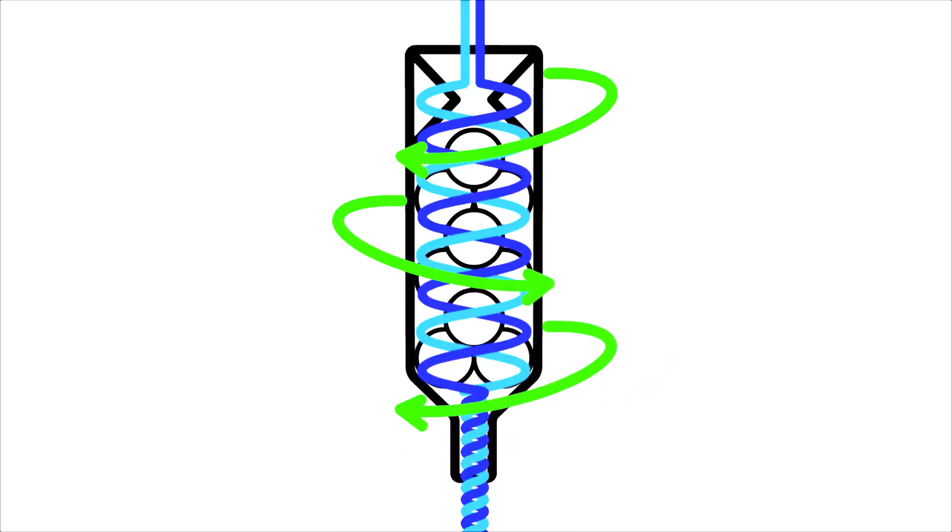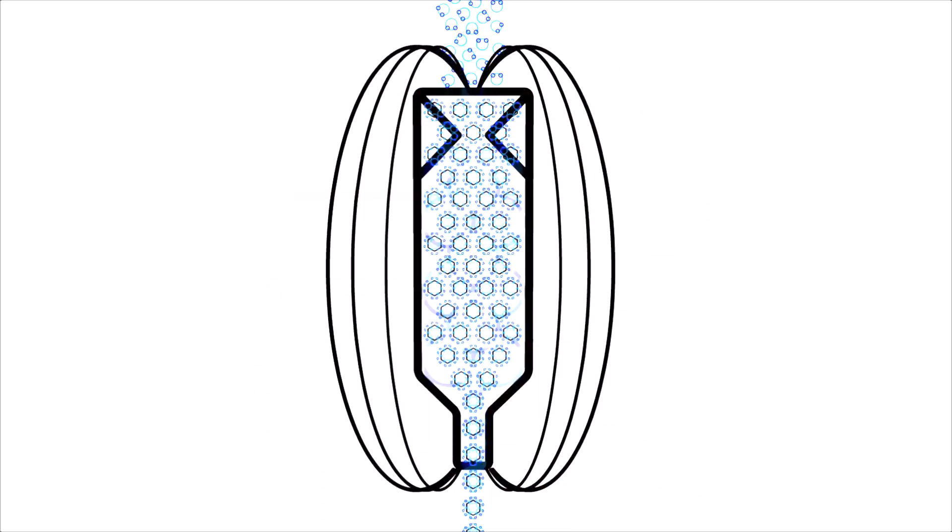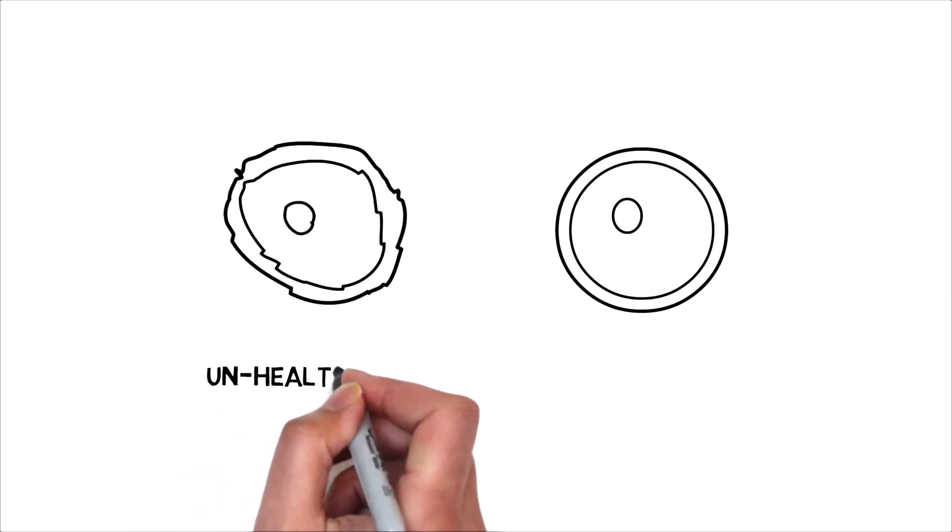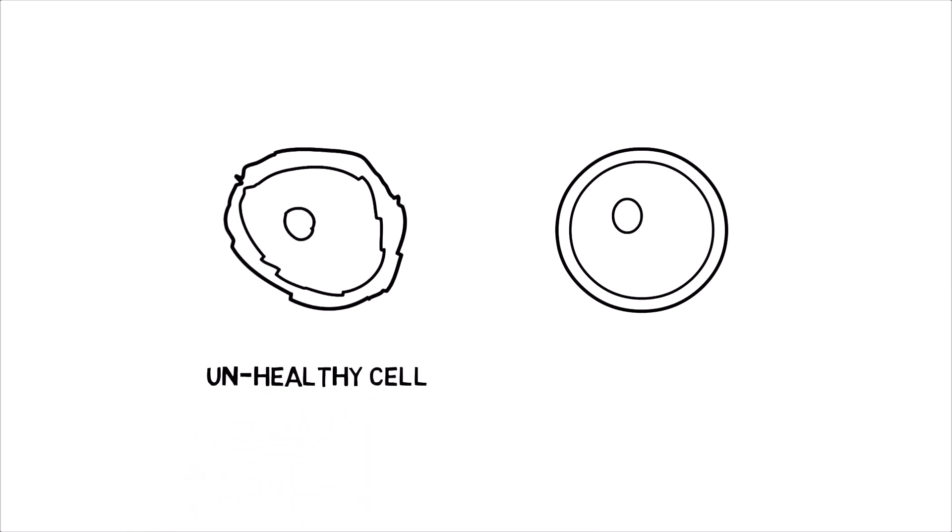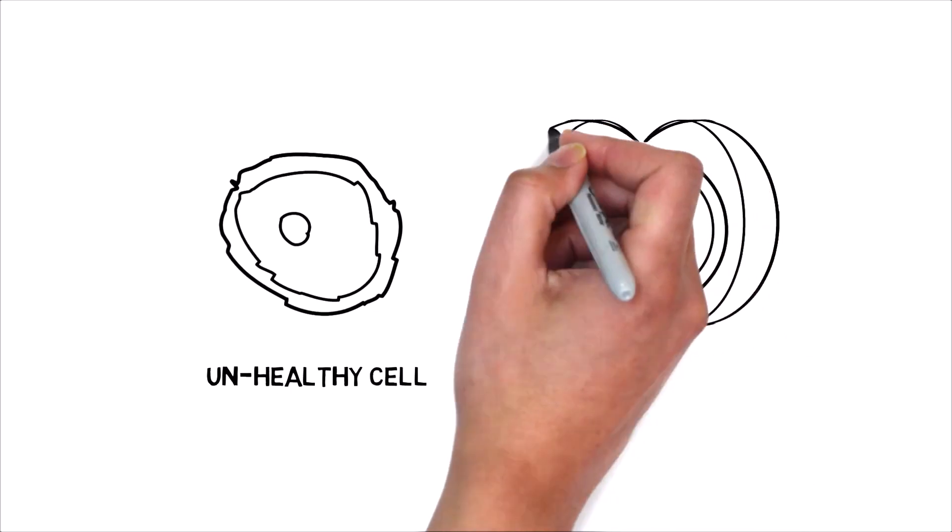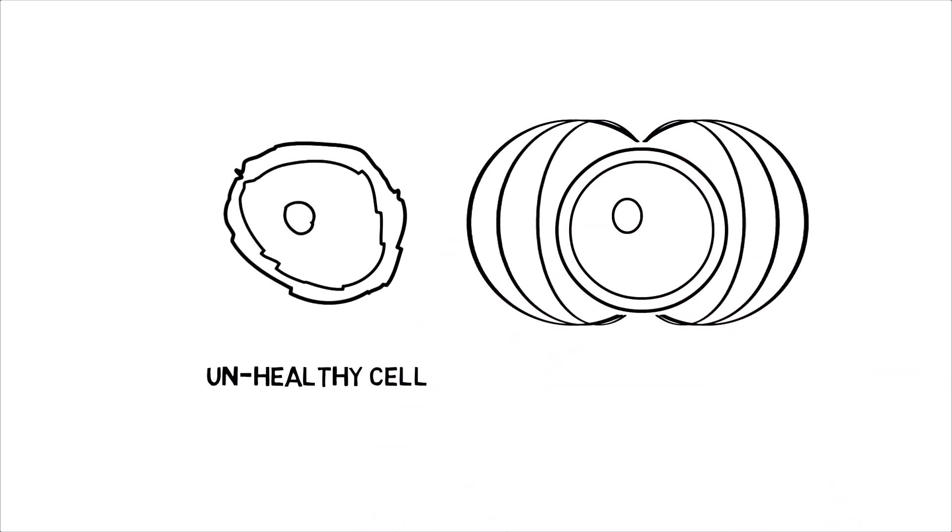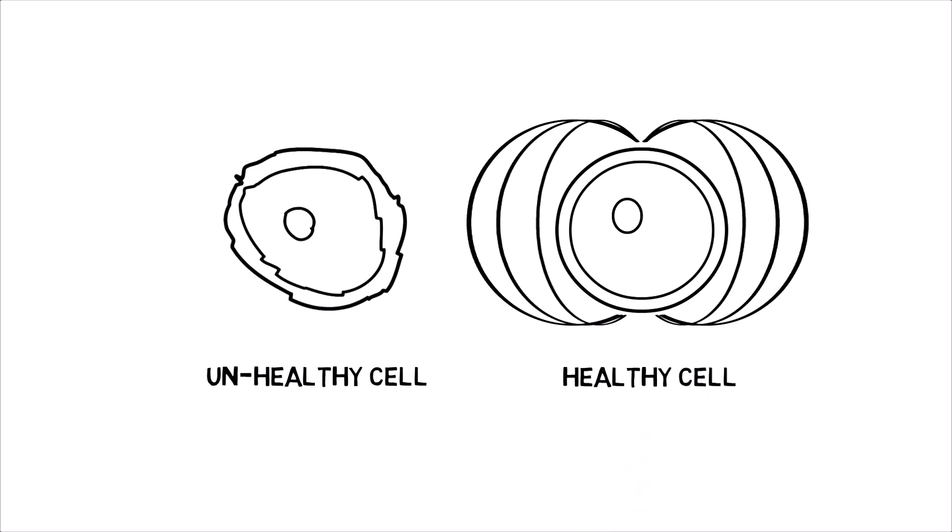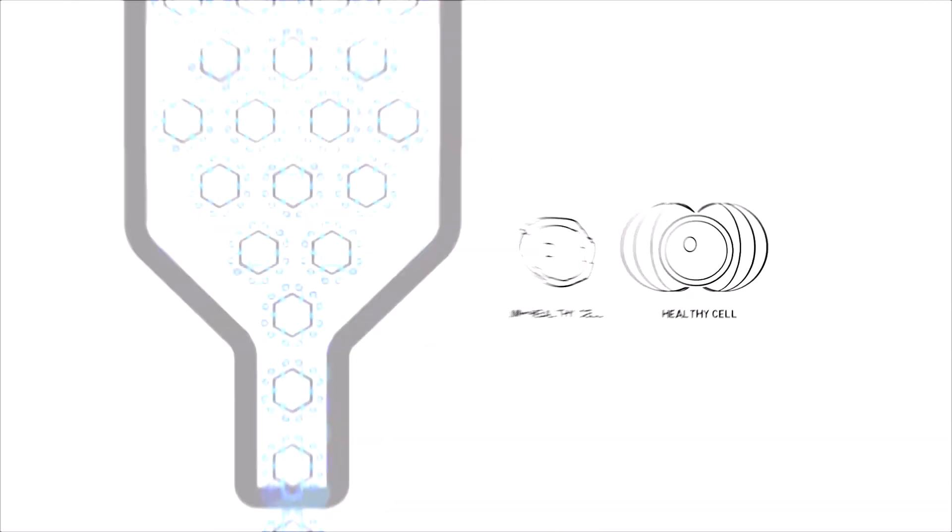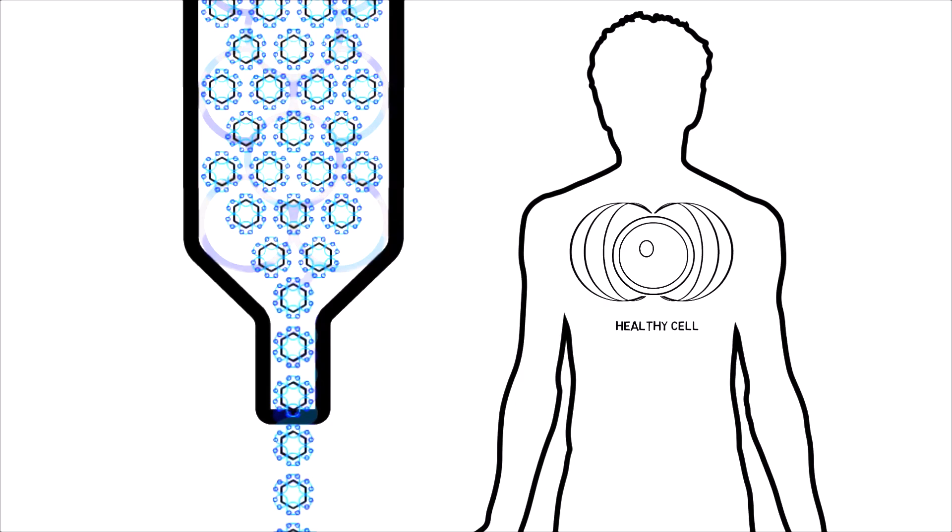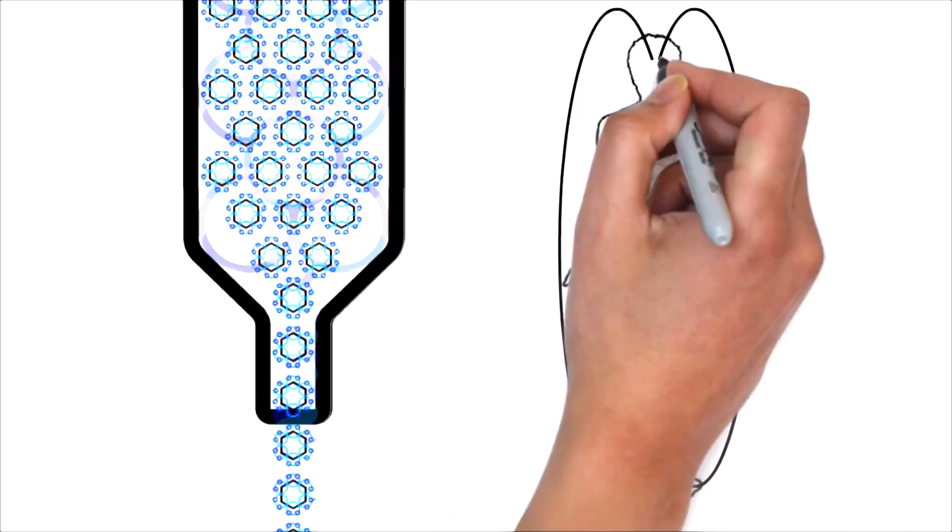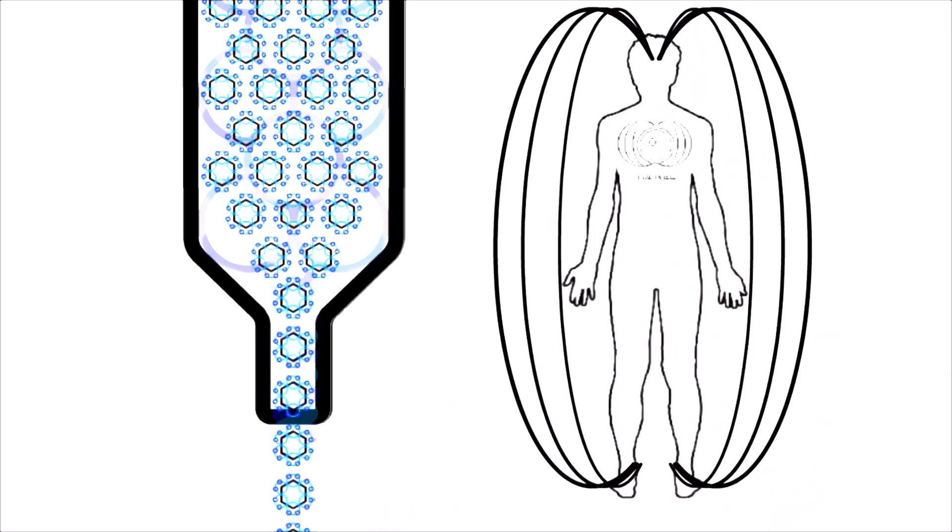The health of a biological cell is largely related to the level of structuring within the water. A healthy cell is comprised of 90% water. A weak cell has less water with a weak field, and a healthy cell has a strong field. This is primarily due to the level of organization of the molecules in the water within the cells.